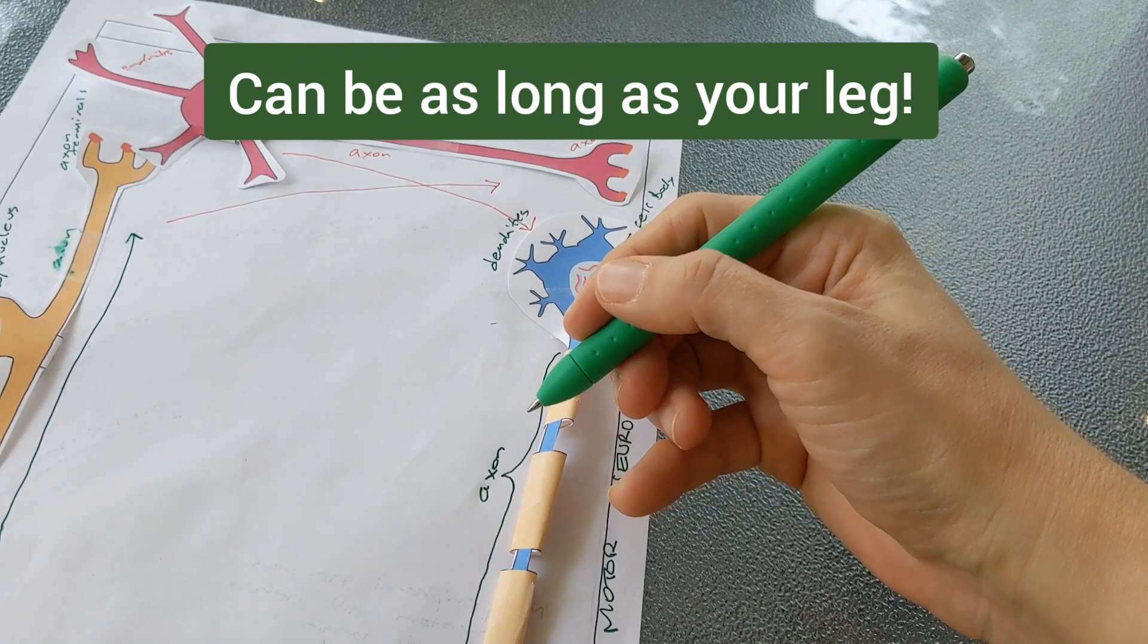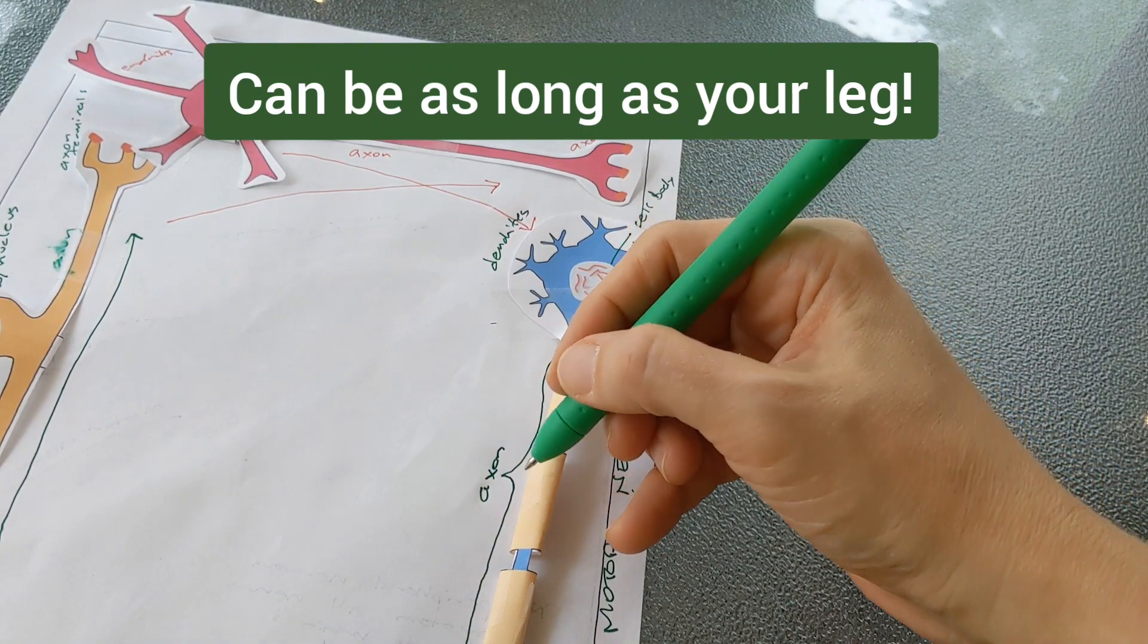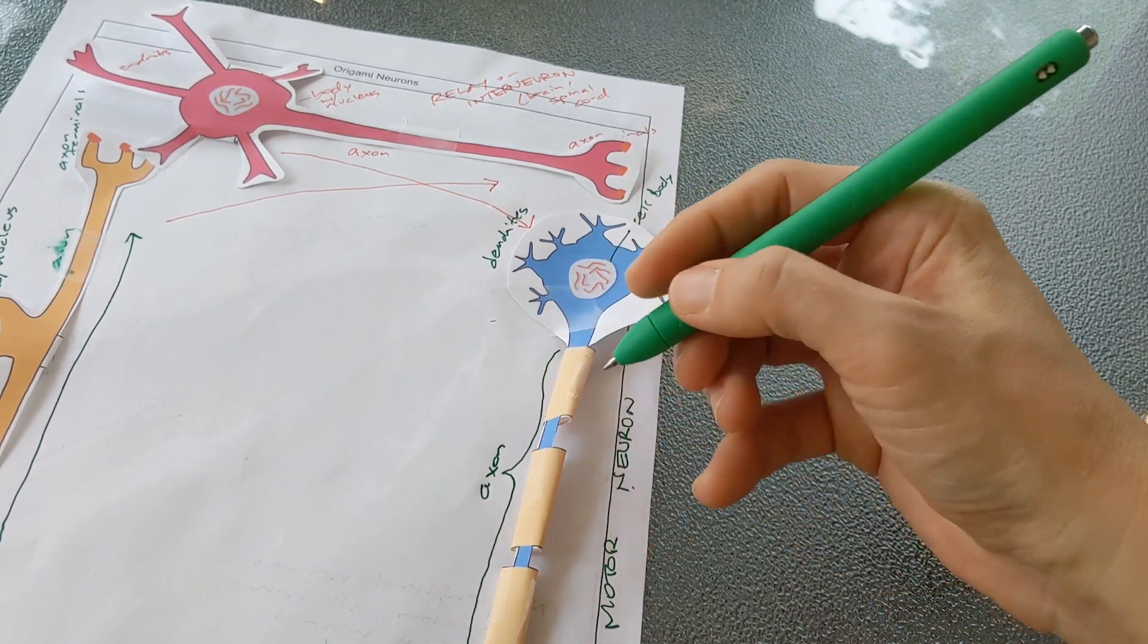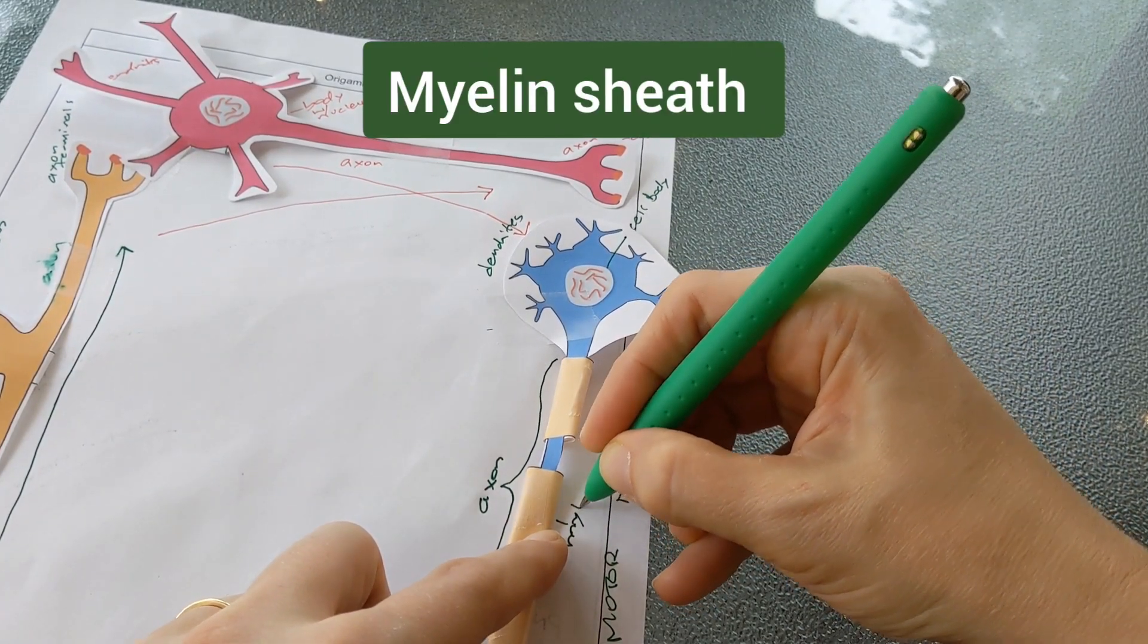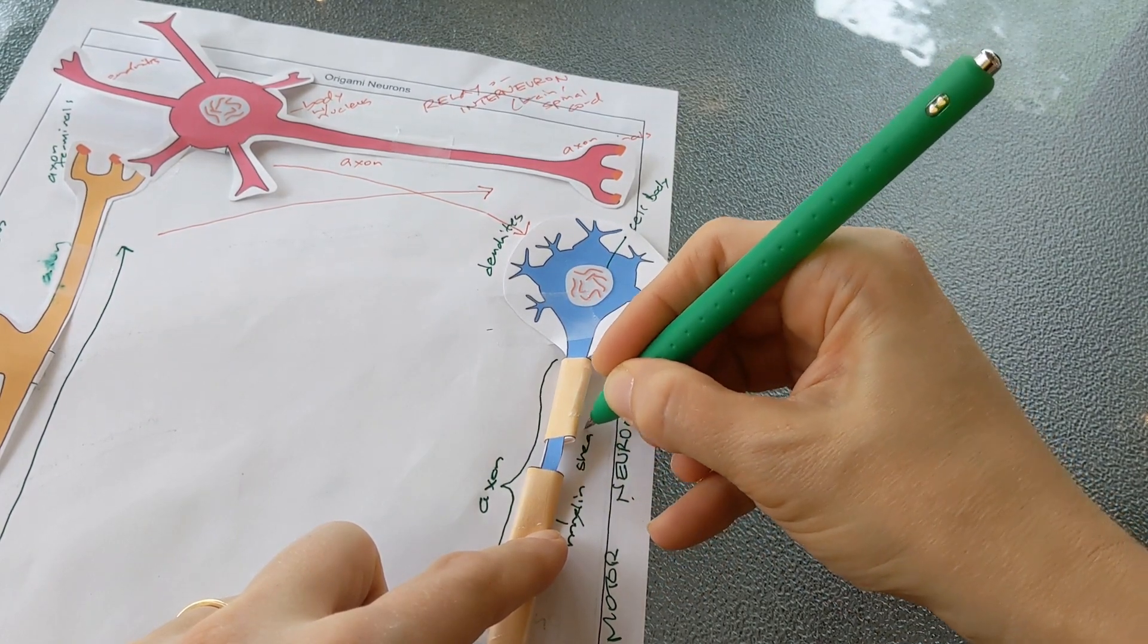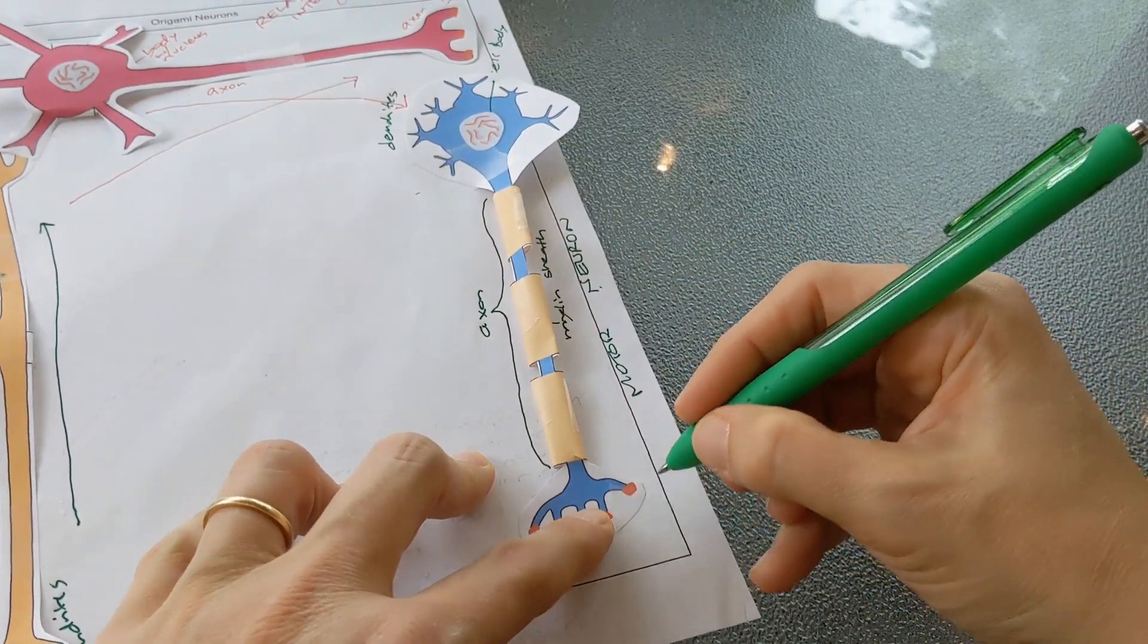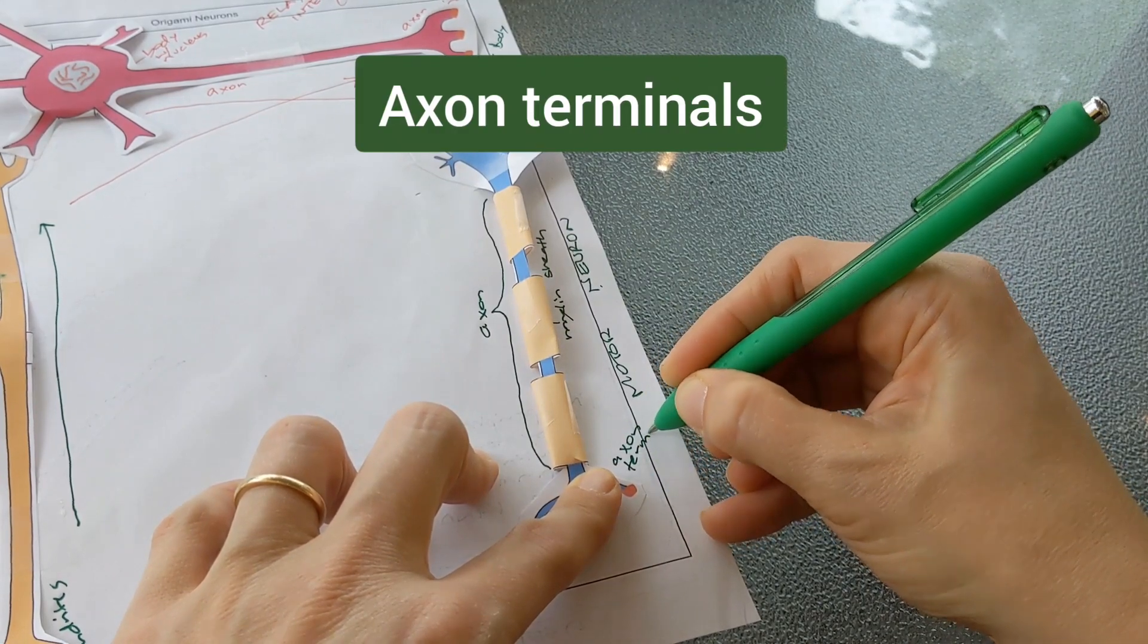If you think about from your spinal cord down to your toe, you have motor axons that run the entire length of your leg. So these can be very very long, which is why we need this stuff which is called myelin sheath. And the myelin sheath helps insulate the axon to allow for the signal to travel those long distances. At the end of this neuron we have axon terminals just like every neuron - that's the ending.